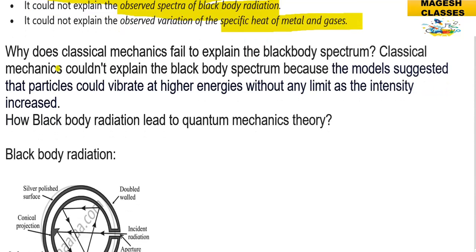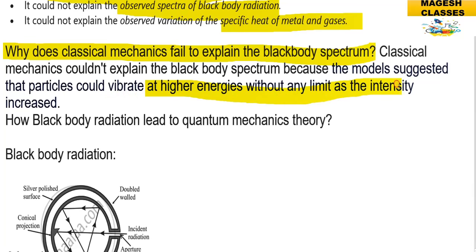Why does classical mechanics fail to explain the black body spectrum? Classical mechanics could not explain the black body spectrum because the model suggested particles could vibrate at higher energies without any limit as the intensity increased.